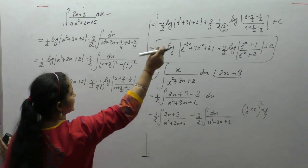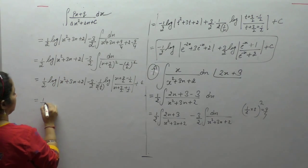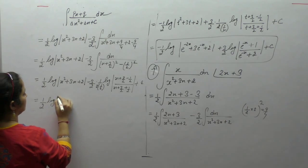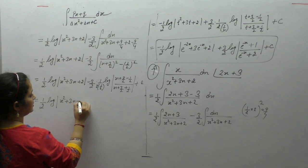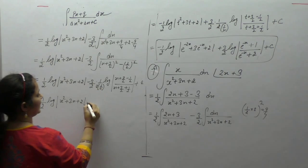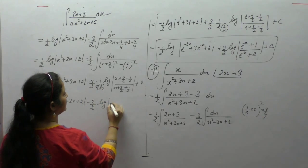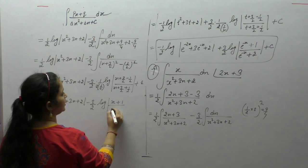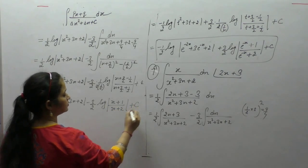This is the same steps we have already done. Minus 3/2 log of (3 minus 1), which is 2 upon 2 equals 1, and 4 upon 2 equals 2. This completes the solution for question 7.